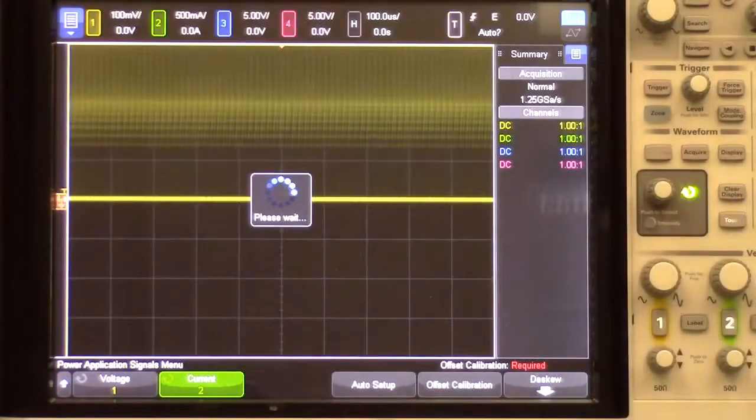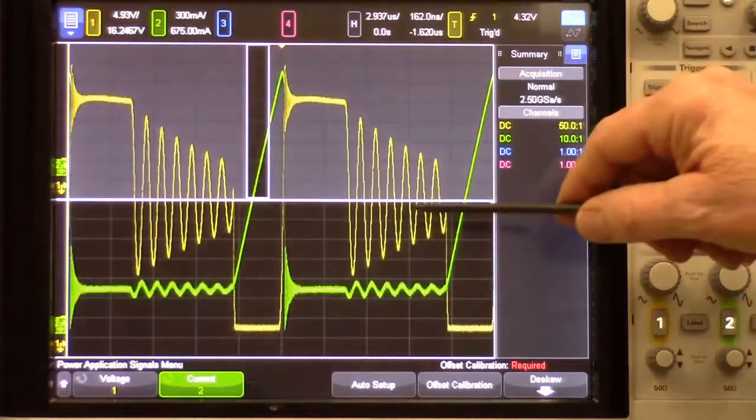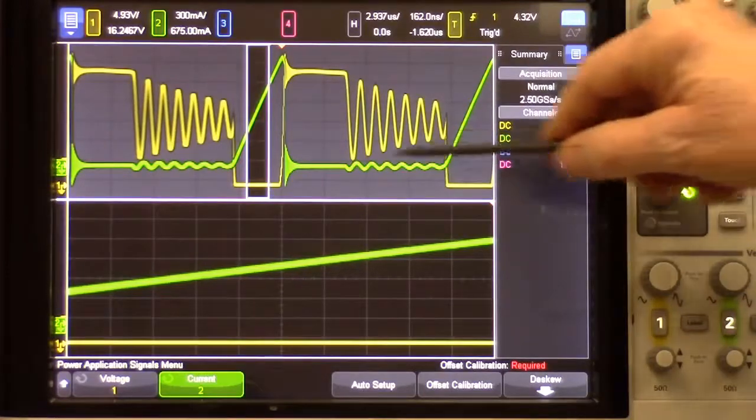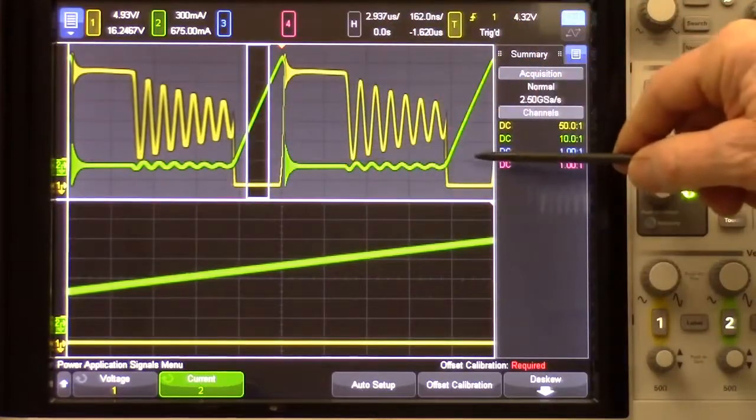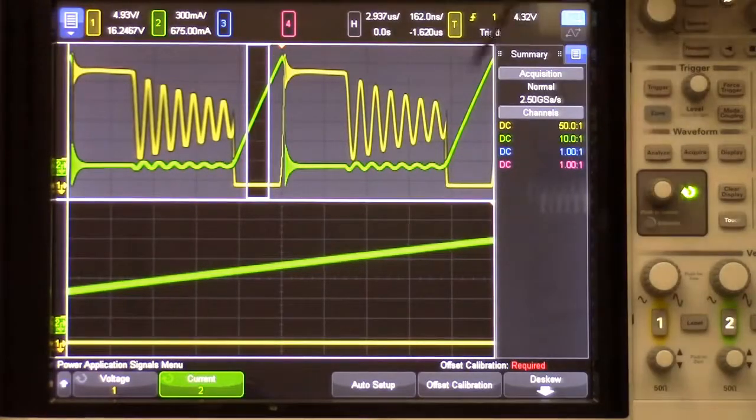Next, I'll simply press Autoscale. When you do that, it automatically optimizes the scaling of the voltage waveform, which you can see here is yellow, and the current waveform, which is green. And then it scales two switching cycles across the main time base window.